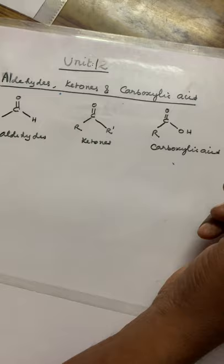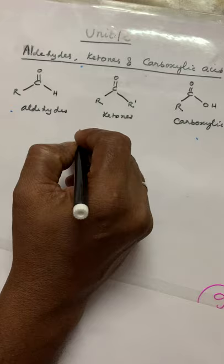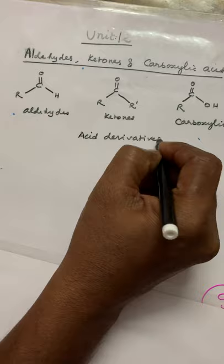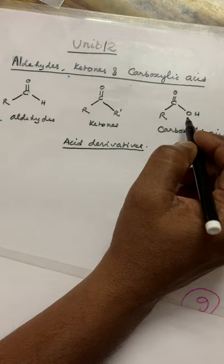This is the topic given in unit 12. But previously, acid derivatives also present. What are the acid derivatives? In the place of OH, if NH2 is present — amide. In the place of OH, if halogen is present — acid chloride.